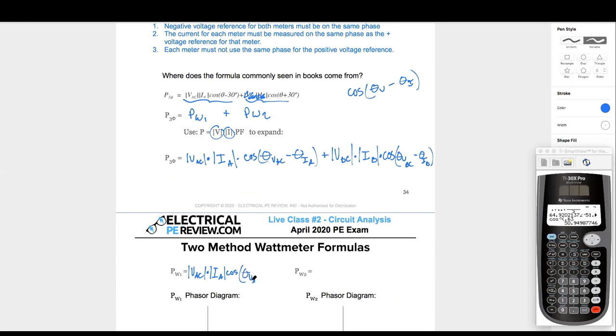So we said wattmeter one was VAC times IA times cosine theta VAC minus theta IA. And we said wattmeter two was magnitude VBC times magnitude IB times cosine theta VBC minus theta IB.